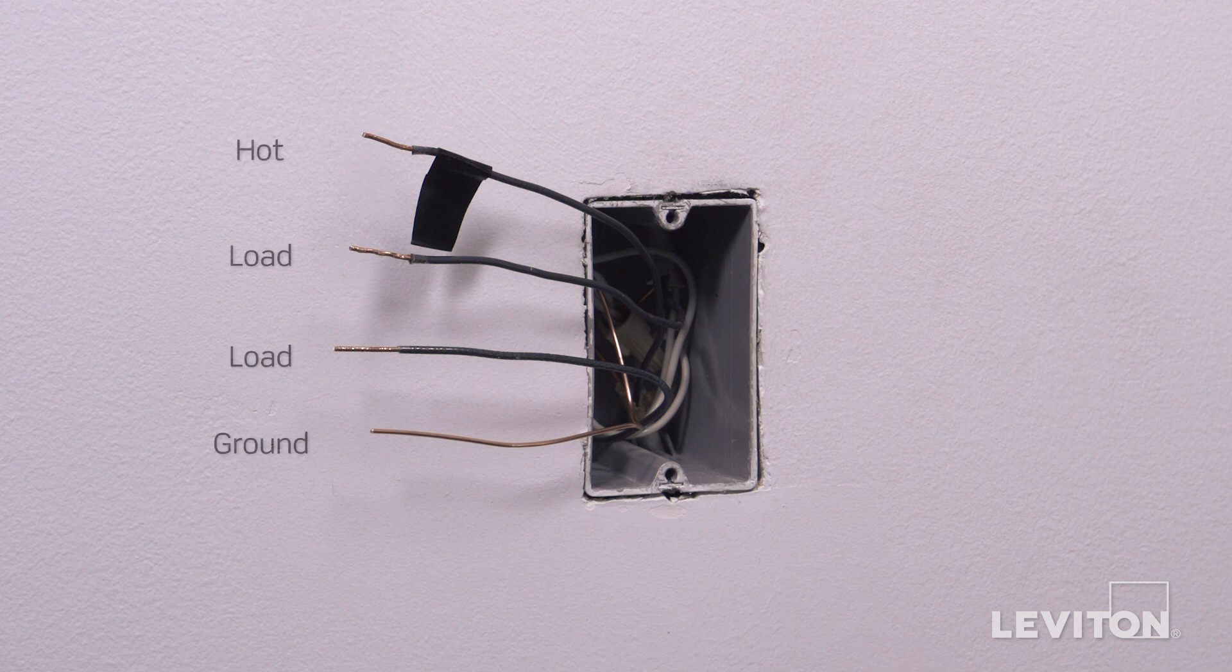In this example, there is one black wire which is the hot, two black wires which are the load, and a bare copper wire which is the ground. Keep in mind,